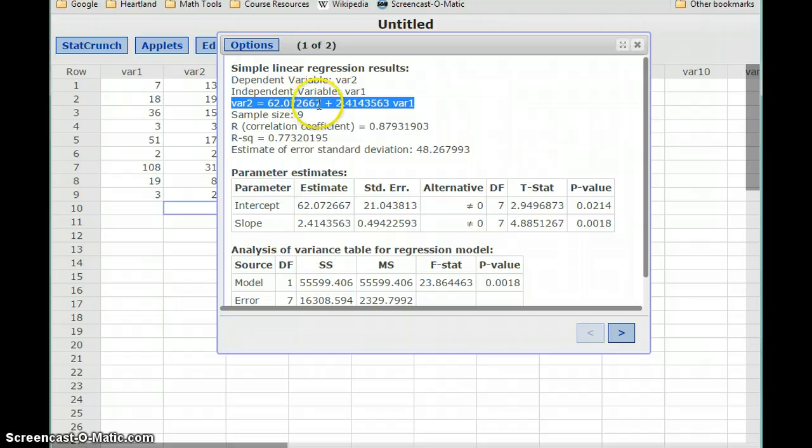or I'm sorry, our y-intercept, plus 2.4 times variable 1, which is 2.4 times x, so our slope of 2.4.